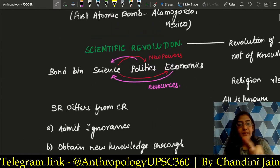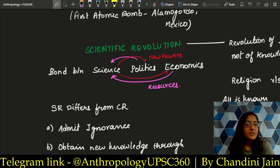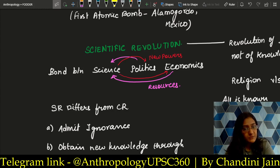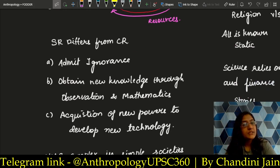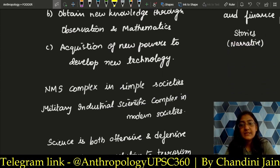The bond between science, politics, and economics — with religion as an add-on — is critical. What does science give to politics and economics? It gives them new powers through new inventions and new dimensions. What does science get from economics and politics? It gets resources — money and direction. Politics, economics, and religion tell science in which direction to move. Scientific revolution means we admit that we are ignorant, which is why we are gaining what we are gaining. We obtain new knowledge through observation and mathematics, and acquire new powers to develop new technology.